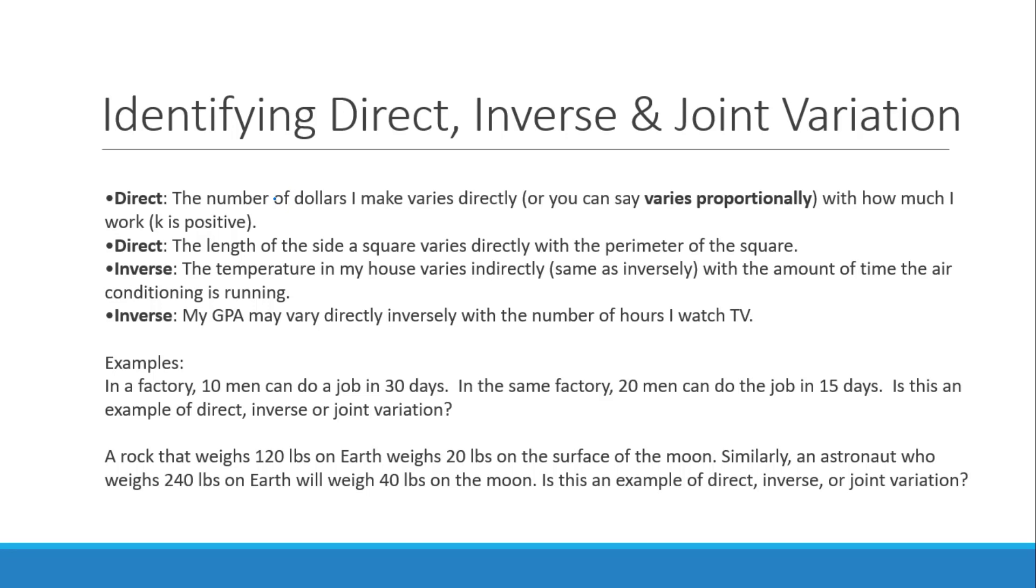Now can you identify these in terms of a real world scenario? So direct, an example would be the number of dollars I make varies directly with how much I work. As one goes up, the other one goes up. Or the length of the side of a square varies directly with the perimeter. Again, as the length goes up, then the perimeter is also going to go up. Inverse would be something like the temperature in my house varies indirectly with the amount of time the air conditioning is running. So as the air conditioning runs longer and longer, the temperature in my house is actually going down. So notice those are opposites.